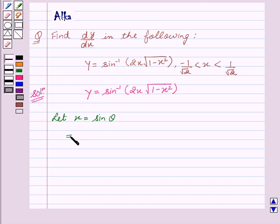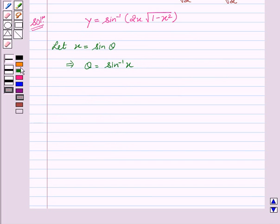This implies θ = sin^(-1) x. Now, this implies y = sin^(-1)(2 sin θ √(1 - sin² θ)).